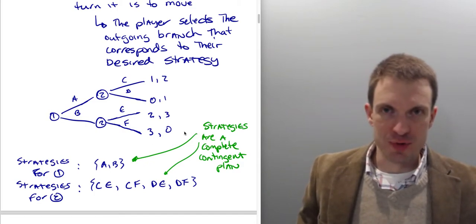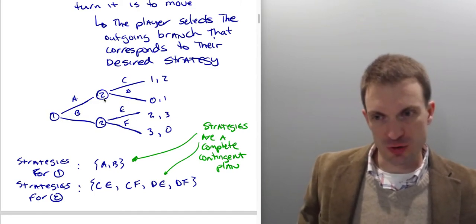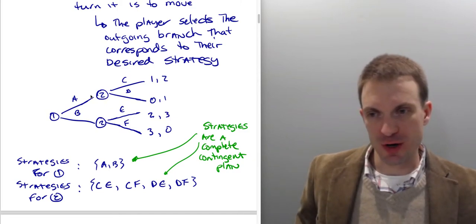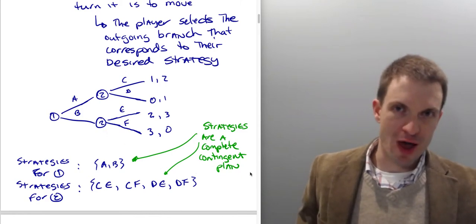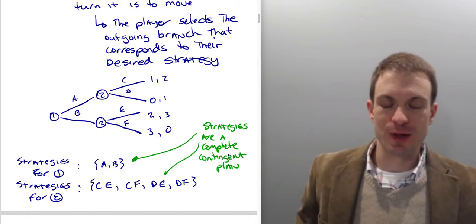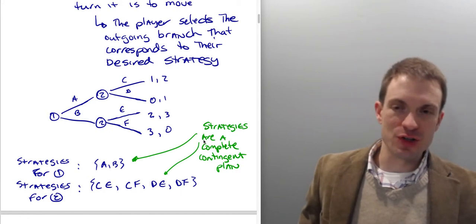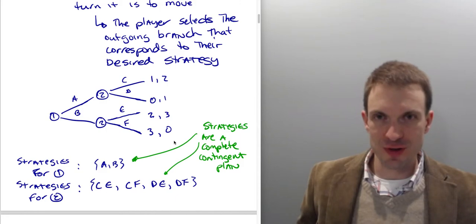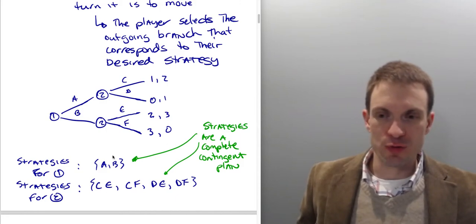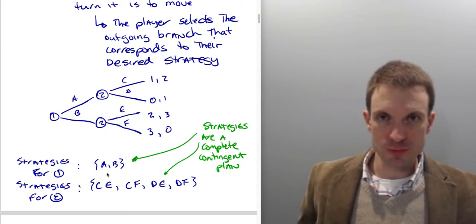So one important observation is that there's a really important difference for player 2 choosing after player 1 selected A versus after player 1 selected B. And we're going to pick this up with our definition of a strategy. So strategies are a complete contingent plan. Therefore, if we enumerate the strategies for each player, we are going to have to, in all cases, be sure to completely stipulate the behavior that would result for that player for each single strategy.